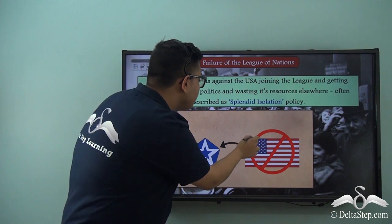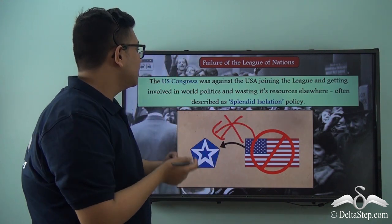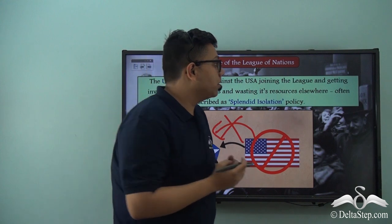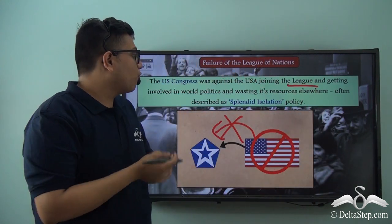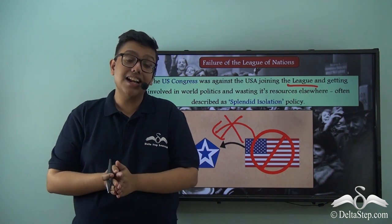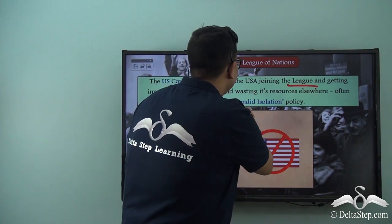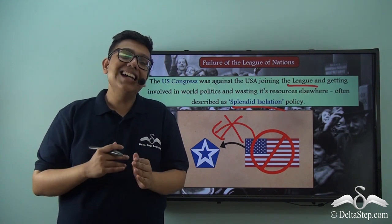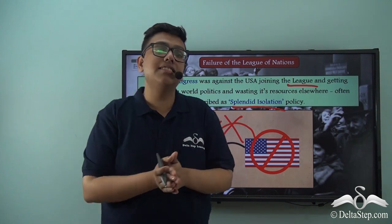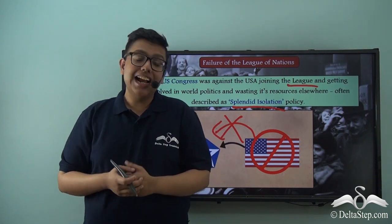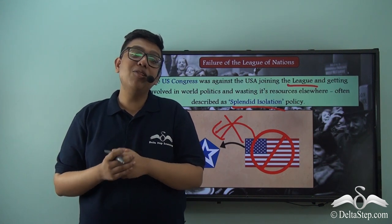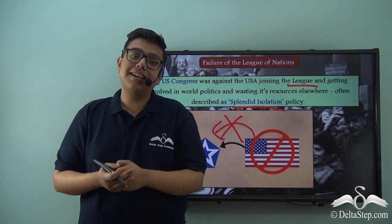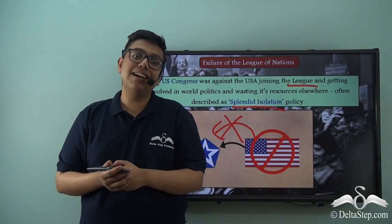The reason the United States of America never joined the League of Nations is because its own Congress, its legislative body, did not allow the country to join the League. This is because the United States was following a policy in international relations known as the Policy of Splendid Isolation, which said that the USA should not be involved in the politics of the rest of the world and should instead focus its own resources on its own development and not waste it elsewhere.